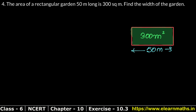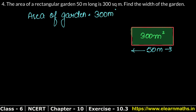Find the width of the garden. We have the length and the area of the garden, that is 300 square meters, and the length of the garden is 50 meters.